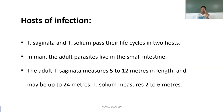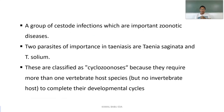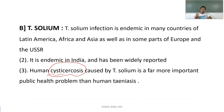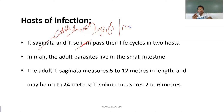Regarding the hosts: Taenia saginata occurs between man and cattle, while Taenia solium occurs between man and pigs. Both require two hosts to complete the life cycle. In man, the adult parasite lives in the small intestine. The adult Taenia saginata measures 5 to 12 meters in length, and can sometimes reach even 24 meters.